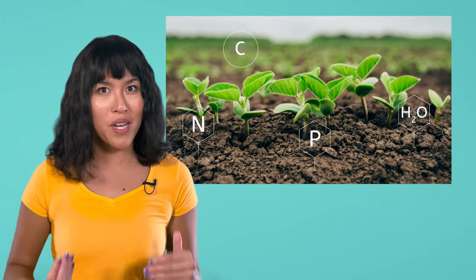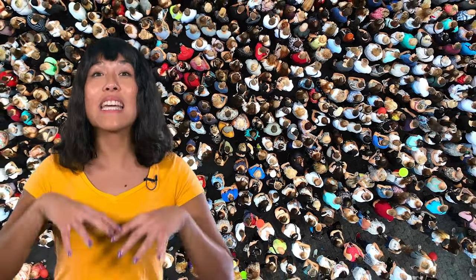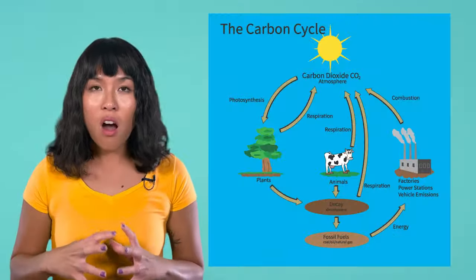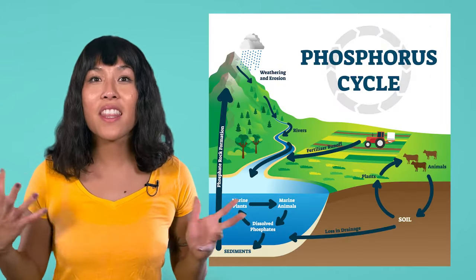Plants and animals, including you and I, need all of these elements and compounds to live. Lucky for us, they move through all of Earth's spheres, including the biosphere, in different amounts, all the time. Although the amount of matter on Earth doesn't really change, its form and location does. Since the Earth's population is bigger than ever before, we can assume that more carbon, nitrogen, phosphorus, and water are currently in the biosphere than ever before. And eventually, since Earth is a closed system, all of those elements and compounds will move back through the atmosphere, hydrosphere, and geosphere in their own cycles.